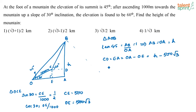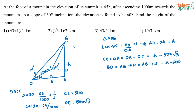Similarly, what is BD in terms of h? BD equals AB minus AD, which equals AB minus CE, which equals h minus 500. We are representing everything in terms of h so that we can solve for h.